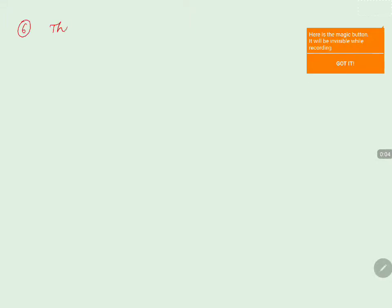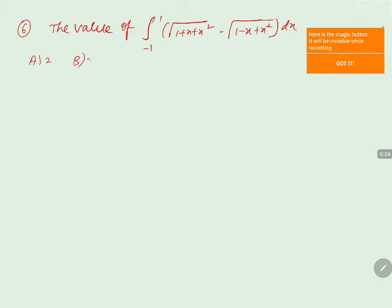The value of the integral from minus 1 to 1 of root of 1 plus x plus x squared minus root of 1 minus x plus x squared, into dx. The first option is 2, second option is 2 root 3, third option is 0, fourth option is 3 root 3.